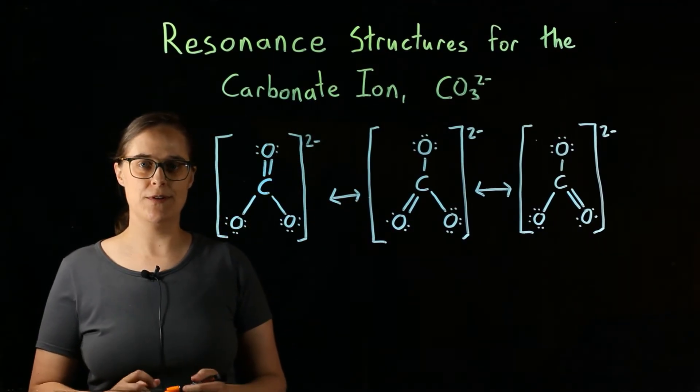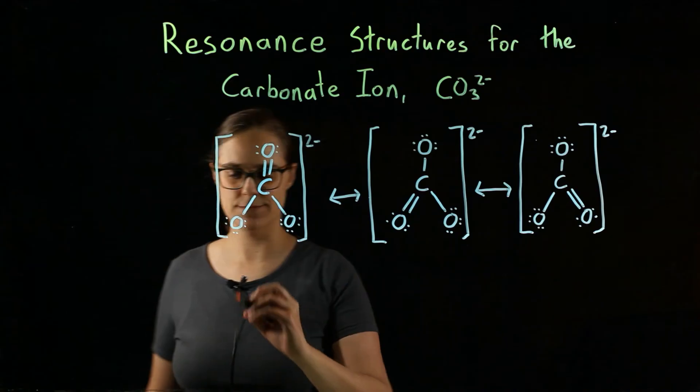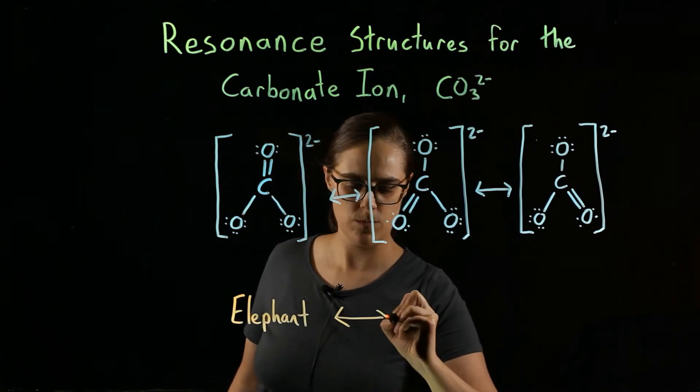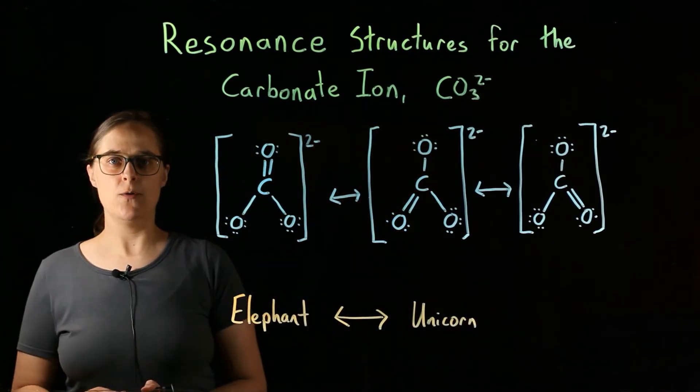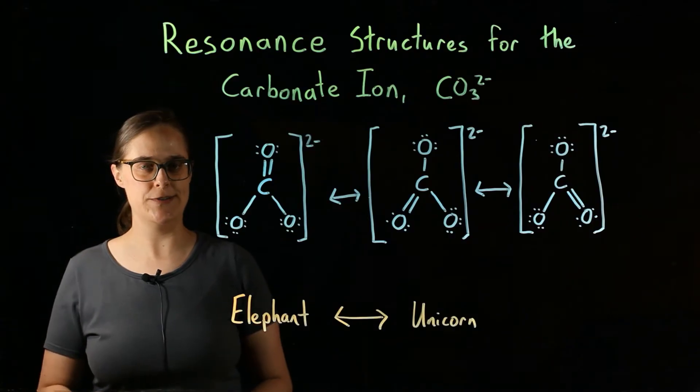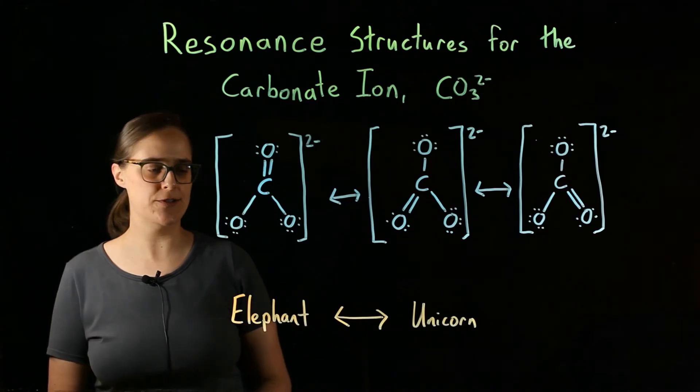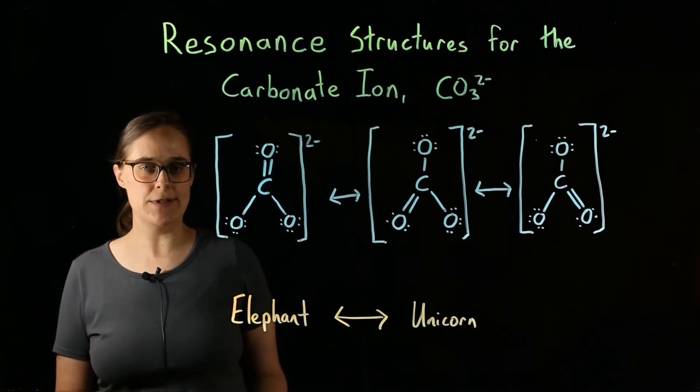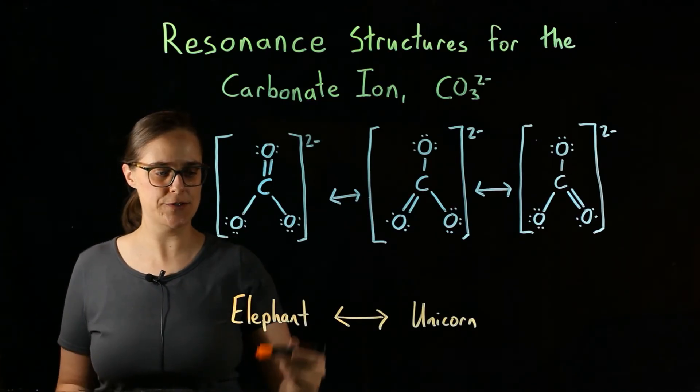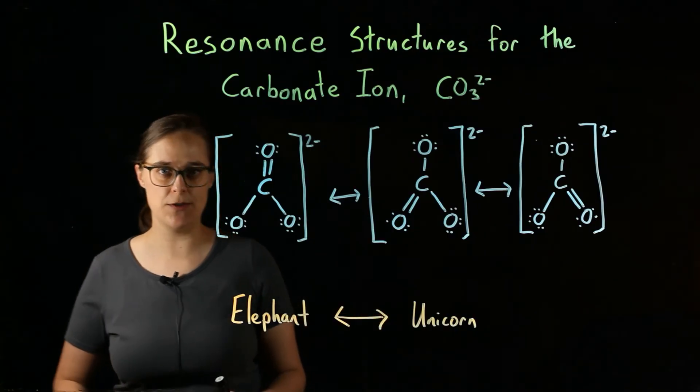Let's go back to our example of the rhinoceros. We described a rhinoceros as a cross between an elephant and a unicorn. To put that in terms of resonance structures, I can say that a rhinoceros has two resonance structures—one being an elephant, one being a unicorn.